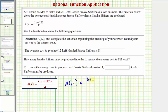So we would have 6 times 12 plus 125 divided by 12. This would give us 72 plus 125 divided by 12. 72 plus 125 is 197, so we have 197 divided by 12. Now we'll get our decimal approximation on the calculator.